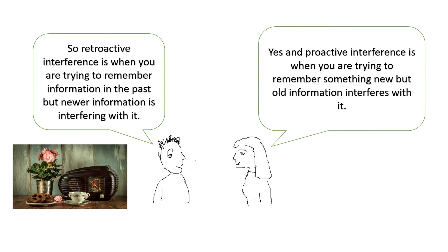Just to clarify: retroactive interference is when you're trying to remember information in the past, but newer information interferes with it. And proactive interference is when you're trying to remember something new, but old information interferes with it.